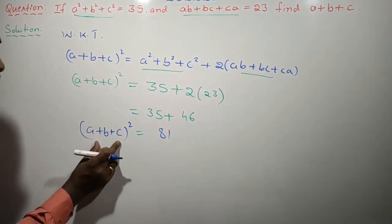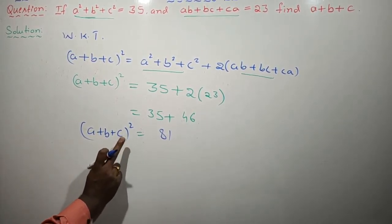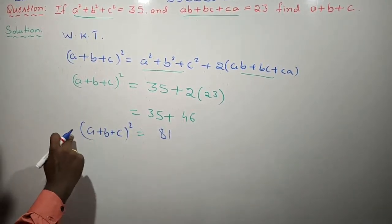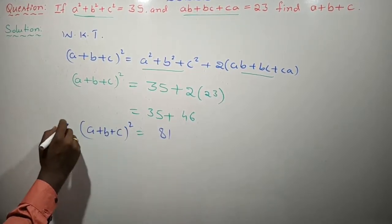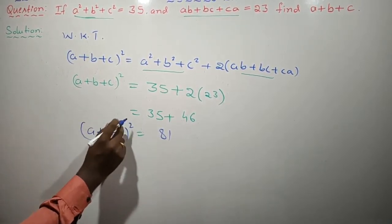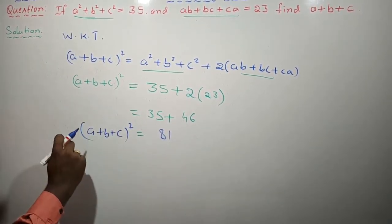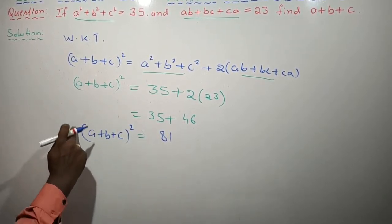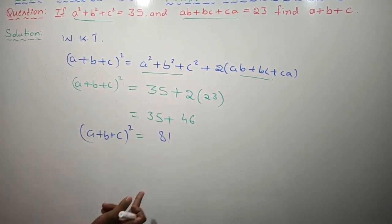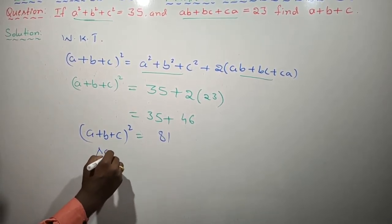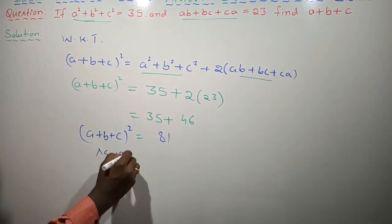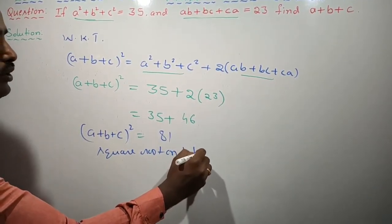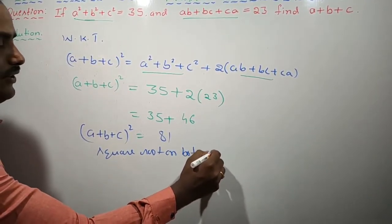I want only the value of a plus b plus c — I don't want the whole square, children. What can I do? Apply a square root. If a square is there, we apply square root; if a cube is there, we apply cube root. But we will not apply it only to the left-hand side — we will apply it to both sides, children.